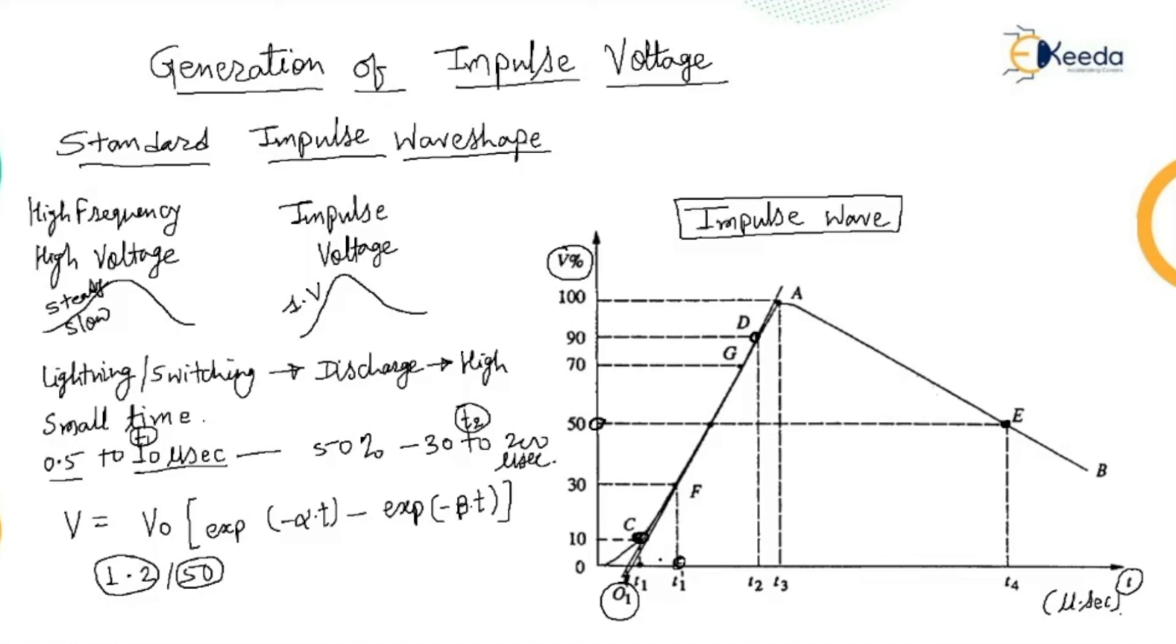As per Indian standards specifications, 1.2 to 50 microsecond wave to be the standard lightning impulse. The tolerance allowed in the peak value is plus minus 3%. So, this is the general idea about the waveshape. Hope you understood the concept related to this standard impulse waveshape.